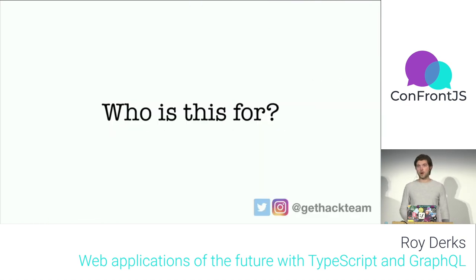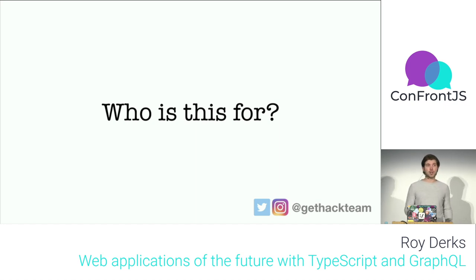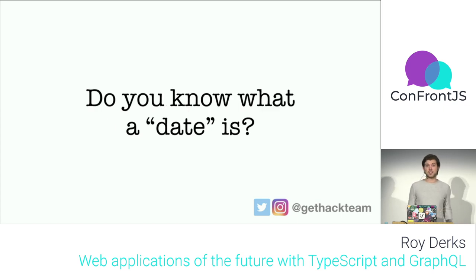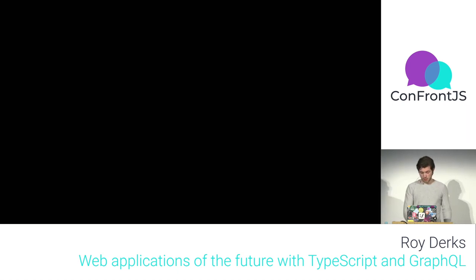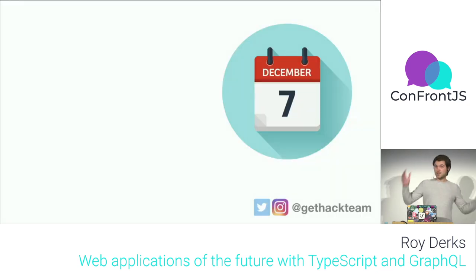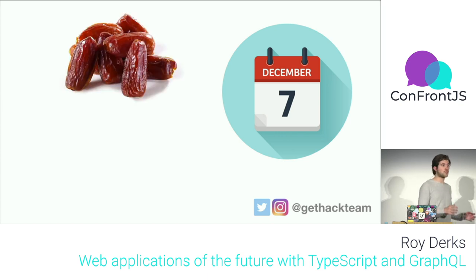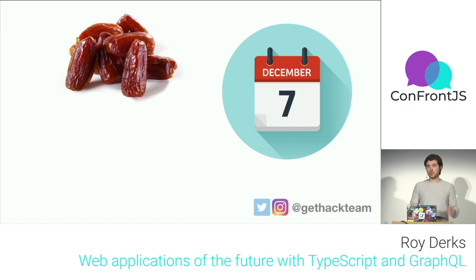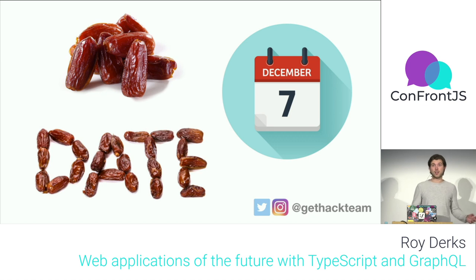So who is this talk actually for? When you're working with GraphQL or TypeScript, types are central. What is a date? A date can be many things. Today is December 7th, which is a date. But you also have those dried fruits also called dates. And if you spell out those dried fruits, you can make the word 'date', which is also a date. This gets really confusing.